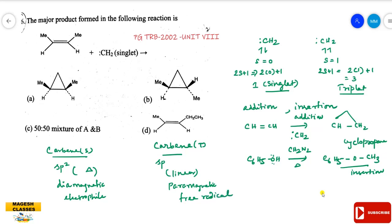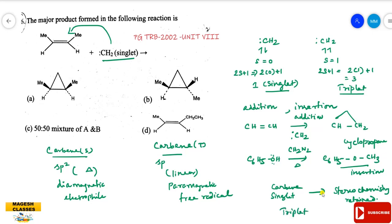From an exam point of view: singlet carbene addition retains stereochemistry — the configuration is retained. With triplet carbene, the configuration changes — you get a mixture including trans product. So singlet carbene addition is stereospecific, while triplet carbene gives loss of stereochemical control.